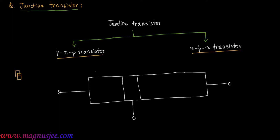This is the N region, this is the P region, and this is the N region. We have three terminals: this terminal is the emitter, this terminal is the base, and this terminal is the collector.